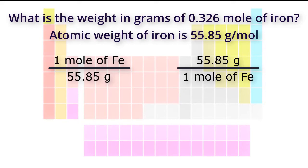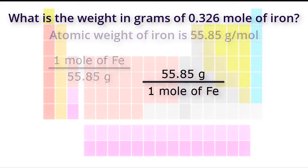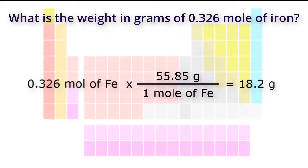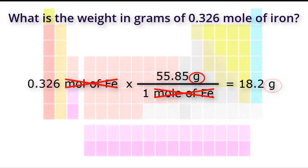Pause the video here and see if you can figure out which conversion factor to use. The correct conversion factor is the one on the right, because we need to cancel out the moles of iron in the denominator so that we are left with only grams of iron in the numerator. Doing the math, the weight in grams of 0.326 moles of iron is 18.2 grams.